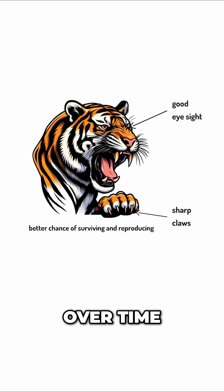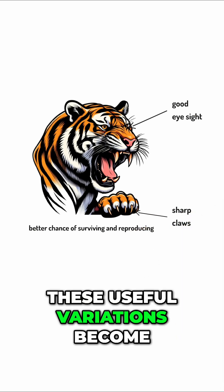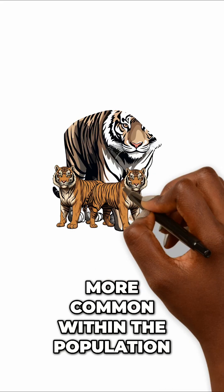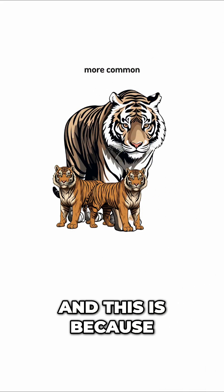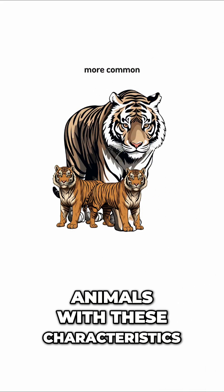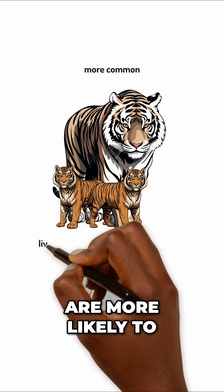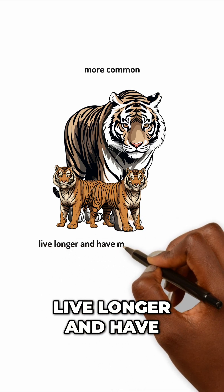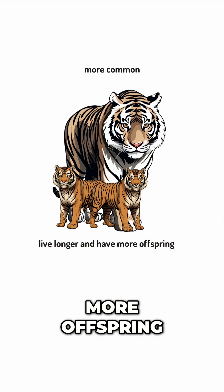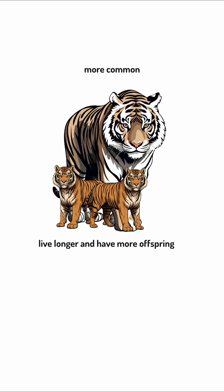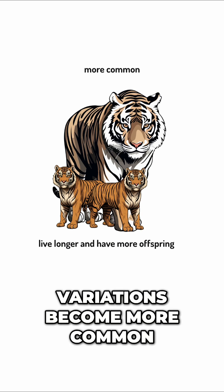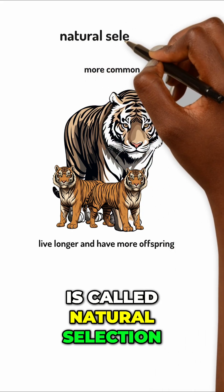Over time, these useful variations become more common within the population. This is because animals with these characteristics are more likely to live longer and have more offspring who also inherit these helpful characteristics. This process, where helpful variations become more common, is called natural selection.